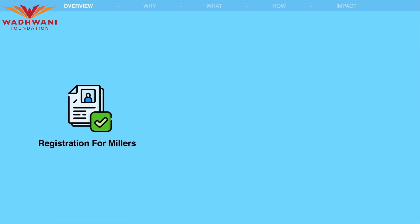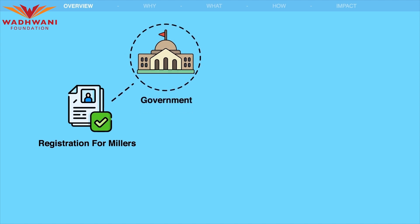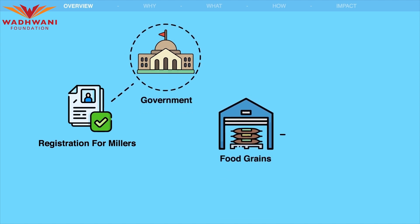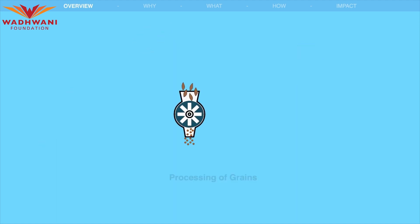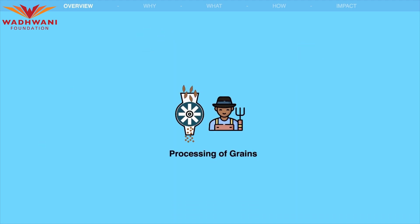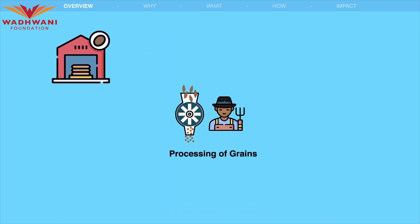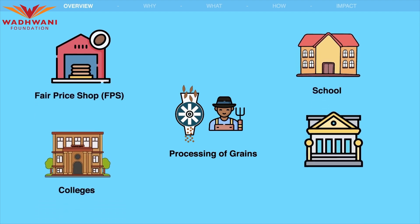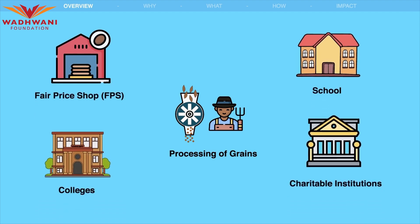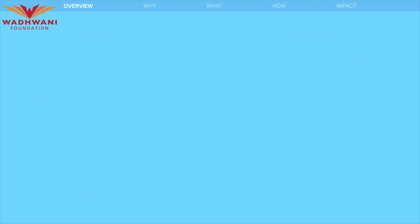These steps include registration of millers with the government, procurement of food grains from farmers at minimum support price (MSP), the processing of grains by millers, and distribution of grains to fair-price shops, schools, colleges, and charitable institutions for beneficiaries.